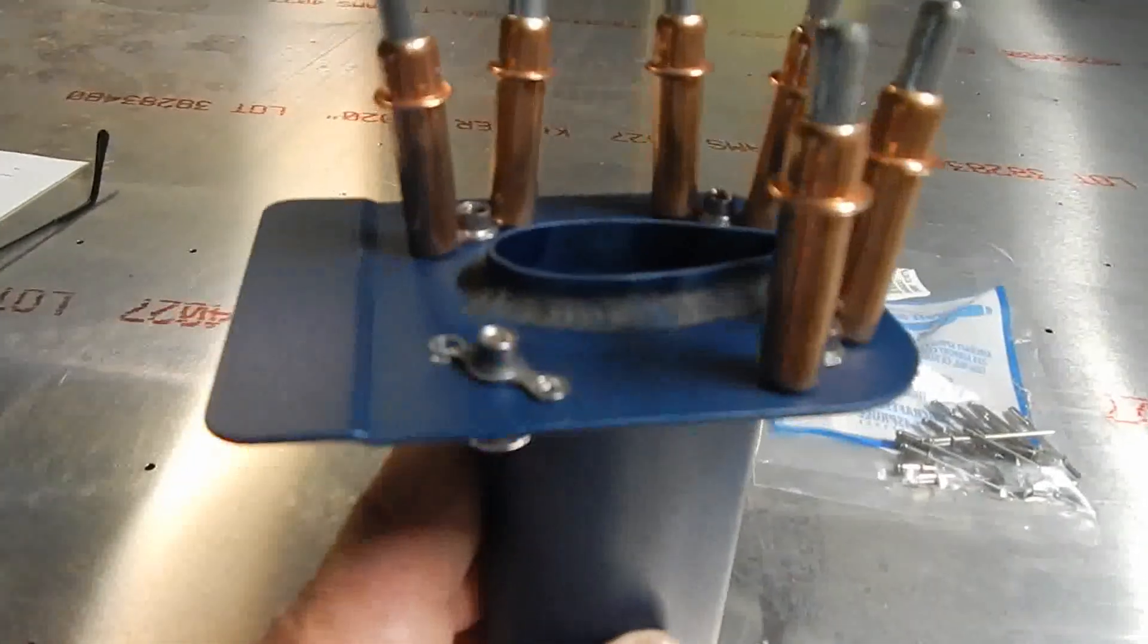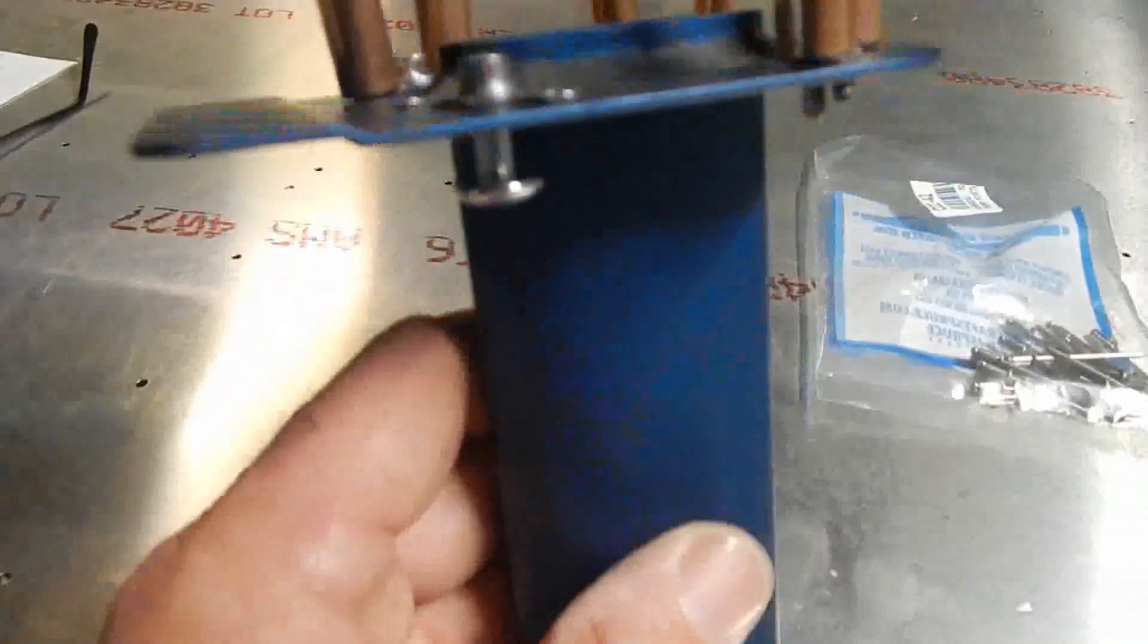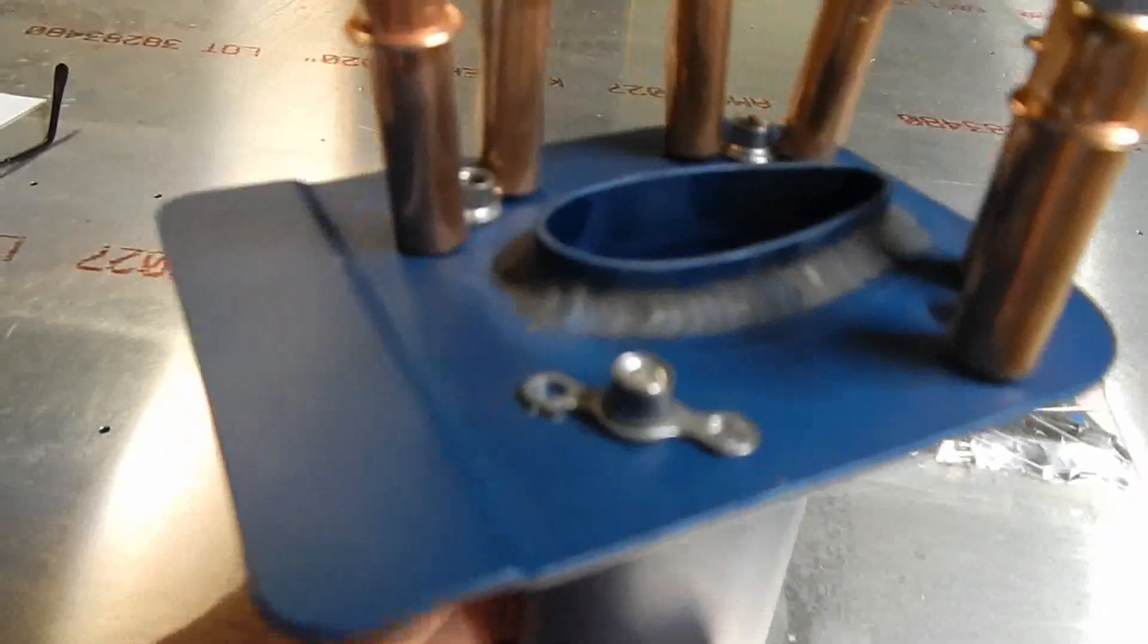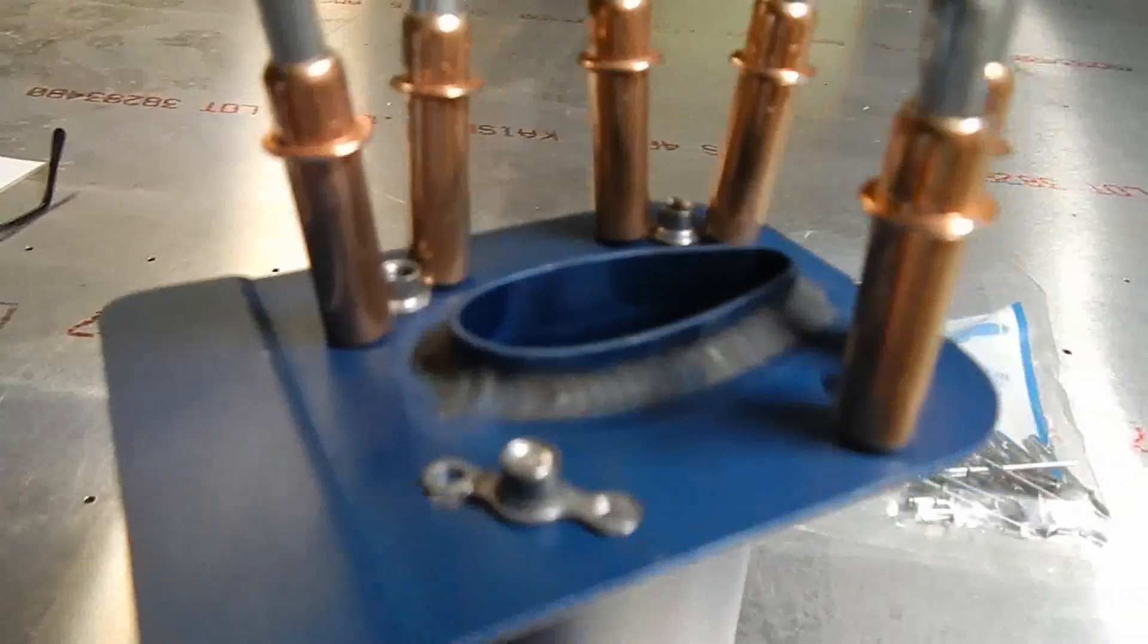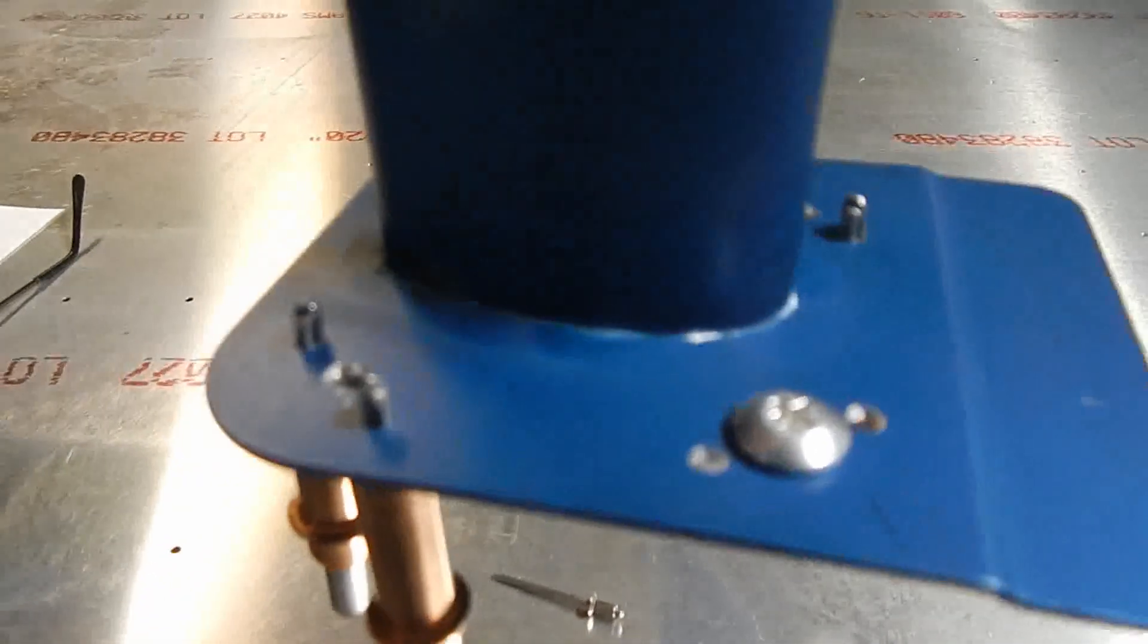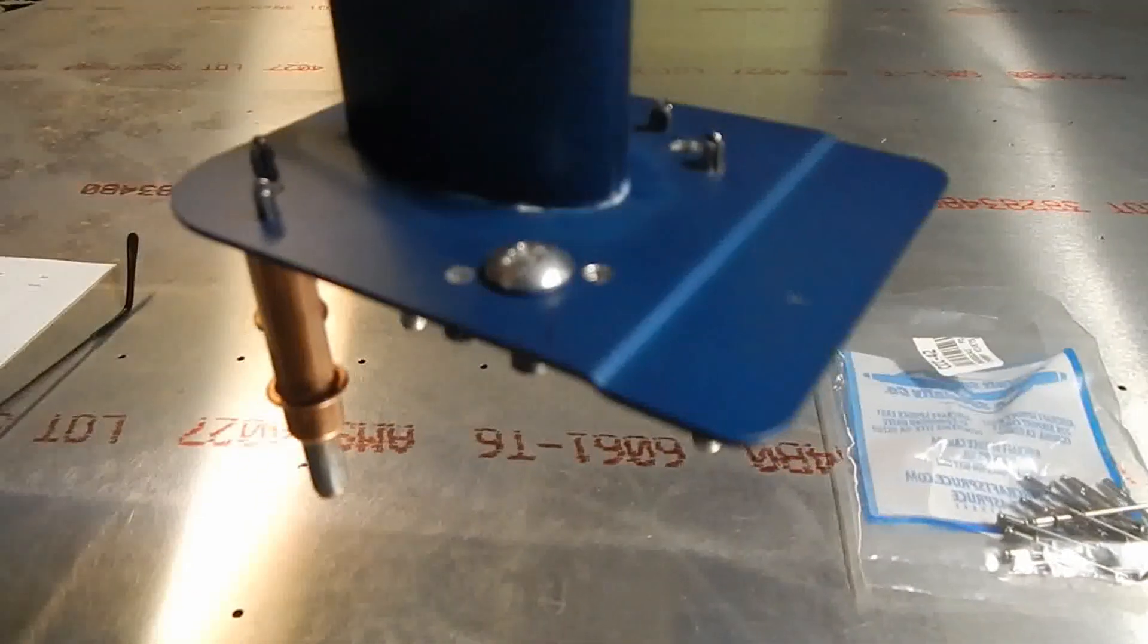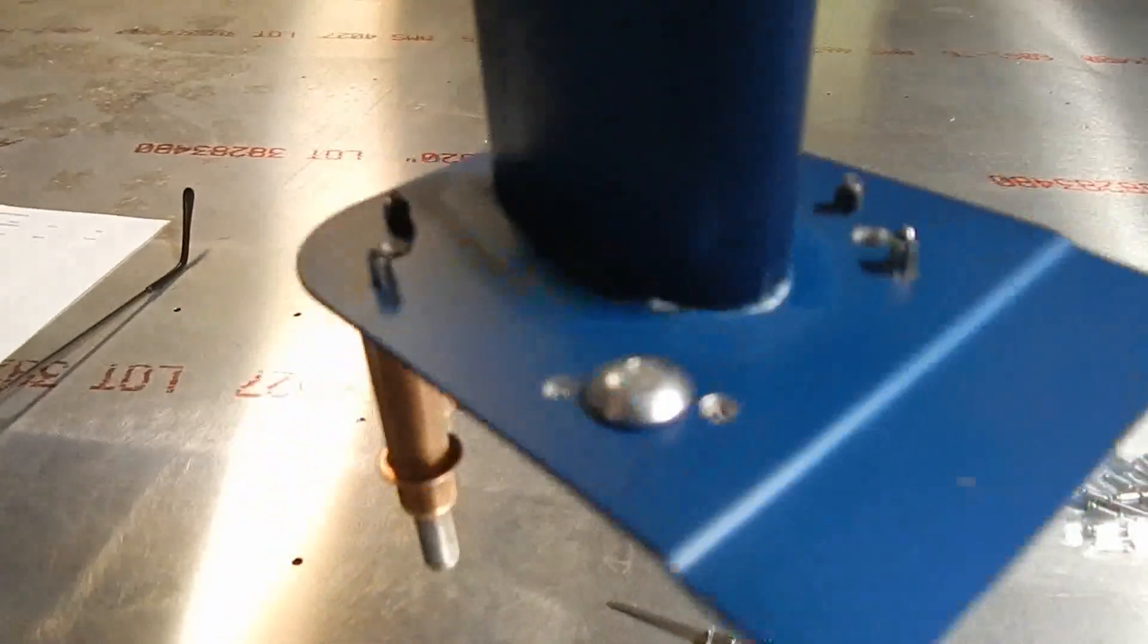The next step is I'm going to rivet these nut plates onto the mast bottom plate. I've left the clicos out of this one. So you can see what is what's happening here. And on the top side, what I'm going to do is I'm going to use a flush rivet on this side, because this has got to come up against that plate that I installed. So I can't have a rounded rivet. So I'm going to have to countersink these and put flush rivets in to hold these nut plates on.